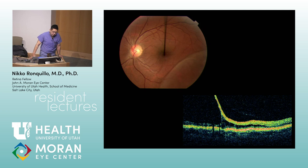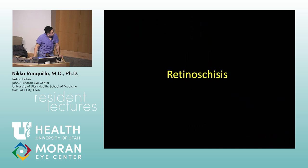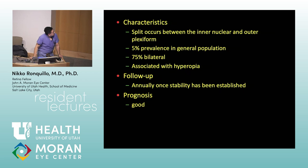Going back to retinal detachments: for trauma-related breaks, where do you usually see them? Inferotemporal is number one; superonasal is the other common location. When trauma occurs, the globe expands equatorially. Retinoschisis split occurs between the inner nuclear and outer plexiform layers — that's important to know.